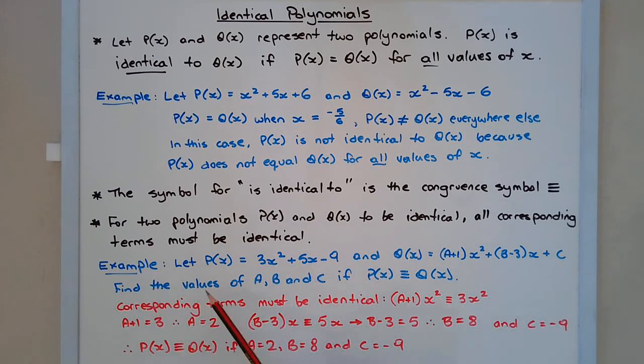So for example, let P of X equal three X squared plus five X minus nine and Q of X equal A plus one in brackets times X squared plus B minus three in brackets times X plus C. Find the values of A, B, and C if P of X is identical to Q of X.